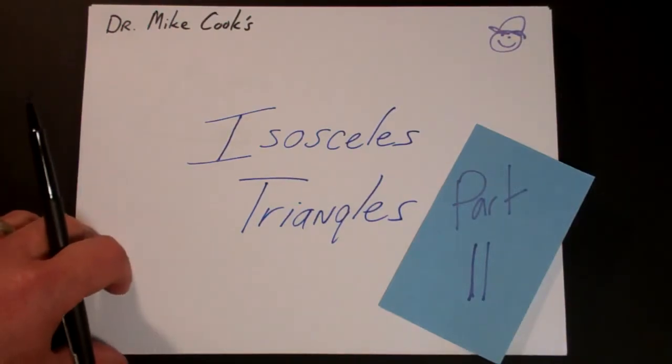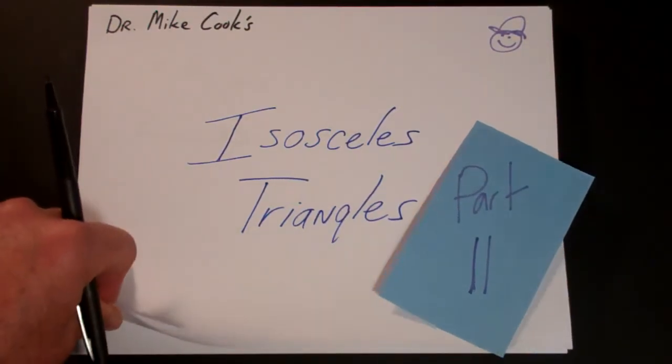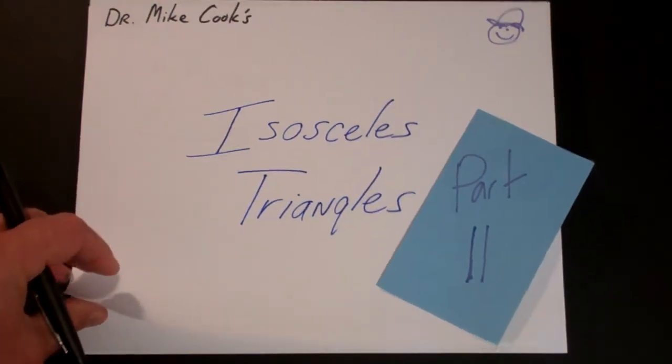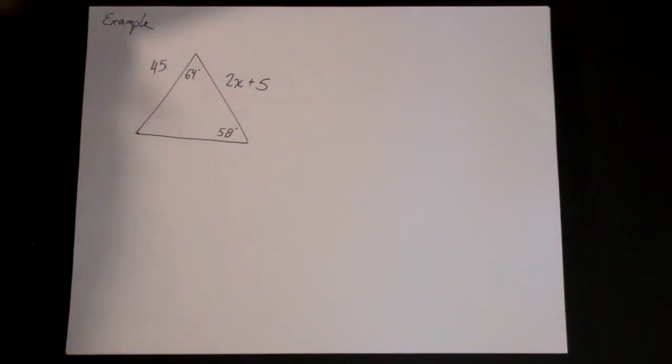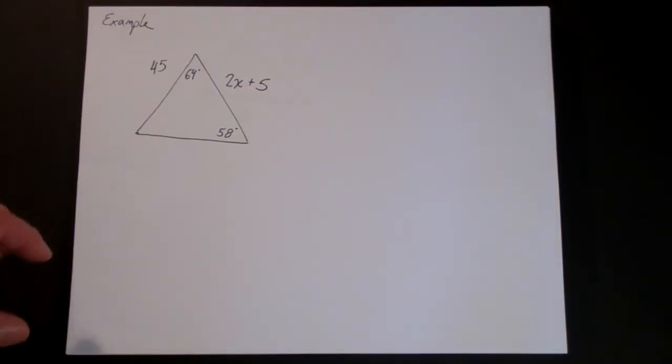This is the second of a series of three videos on isosceles triangles. In this video we're going to look at a couple of example problems. This is the problem that you might be given. It might just be asked to solve for x.